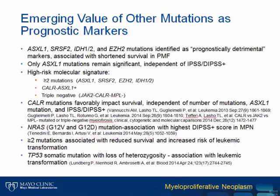CALR mutations favorably impact survival independent of the number of mutations, ASXL1 mutation, and the current IPSS-DIPSS scoring system. Additionally, NRAS mutations have also been reported to be associated with the highest DIPSS-plus score in MPN. There is also evidence that the combination of TP53 somatic mutation with loss of heterozygosity is associated with leukemic transformation.